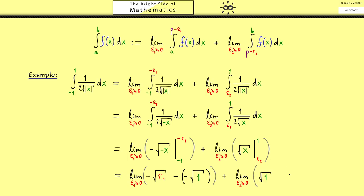And then the second one is simply the square root of 1 minus the square root of epsilon 2. Therefore, in summary, you should see we only have plus 1 plus 1, which is 2.